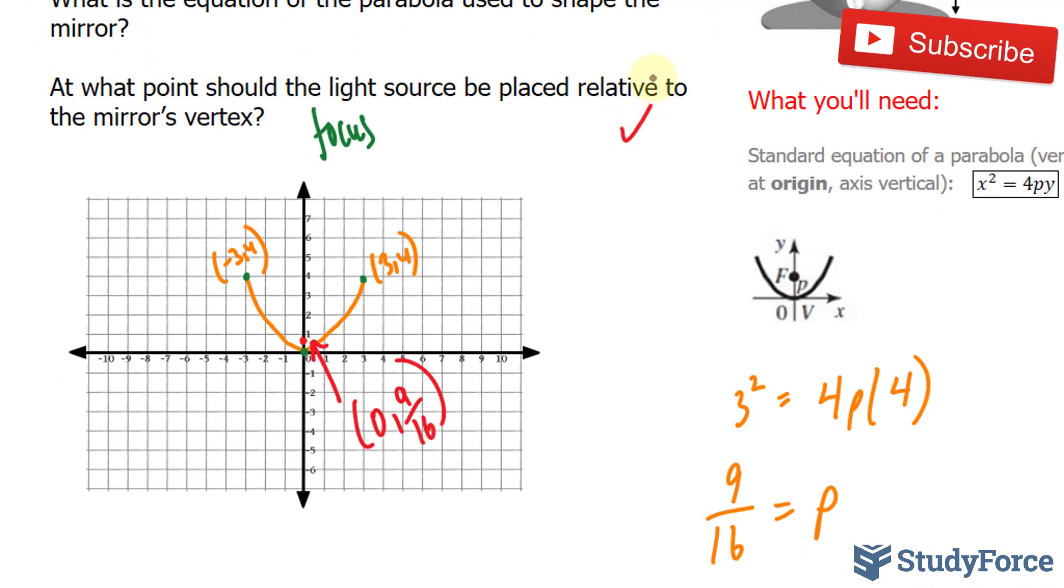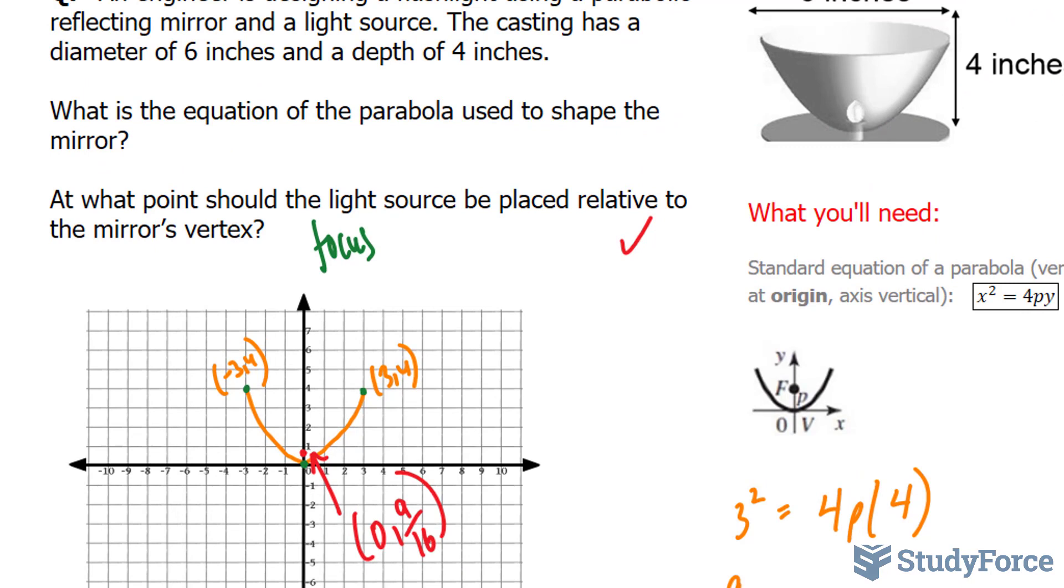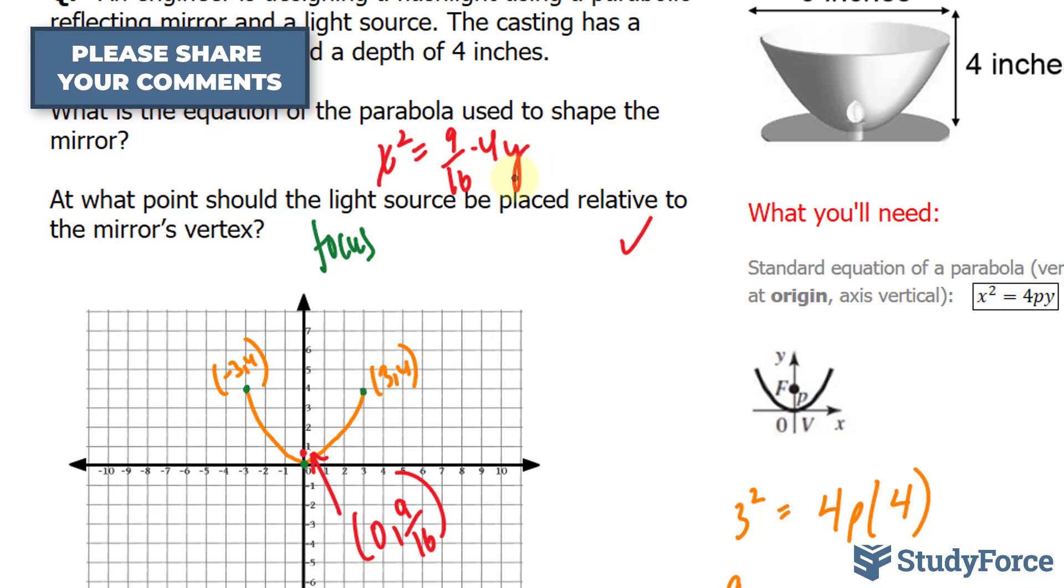So we just answered that. Next, we're asking what is the equation of the parabola used to shape the mirror? We have everything we need. I'll write down x² = (9/16) times 4 times y. The 4 and the 16 will cancel each other out. You'll have a 4 underneath here.